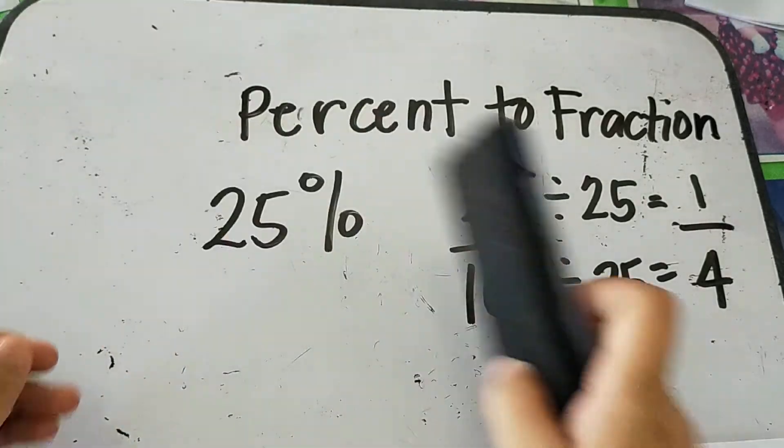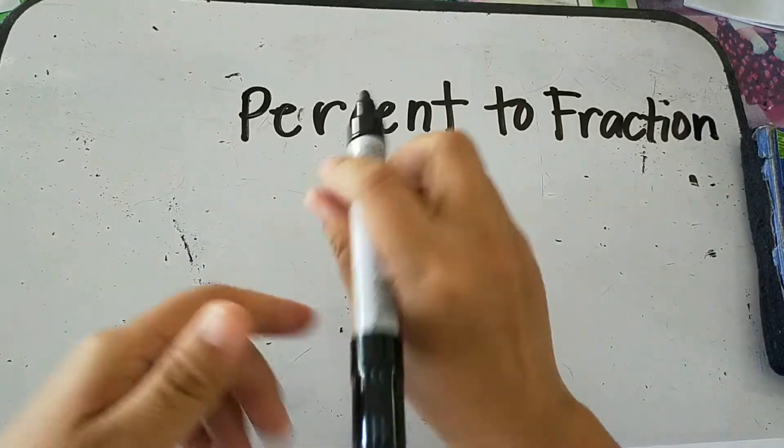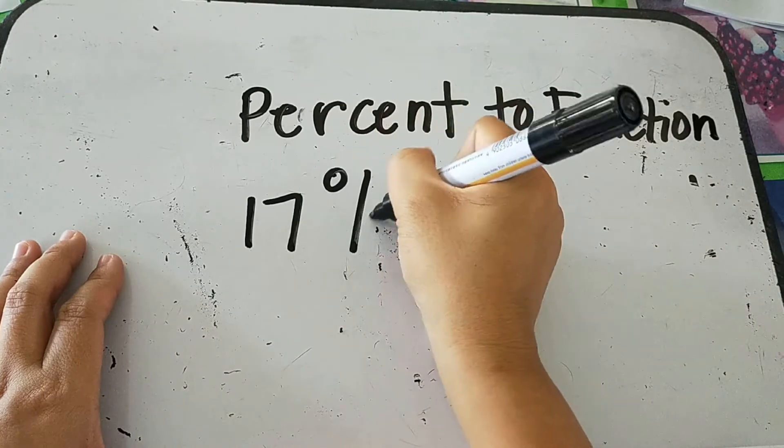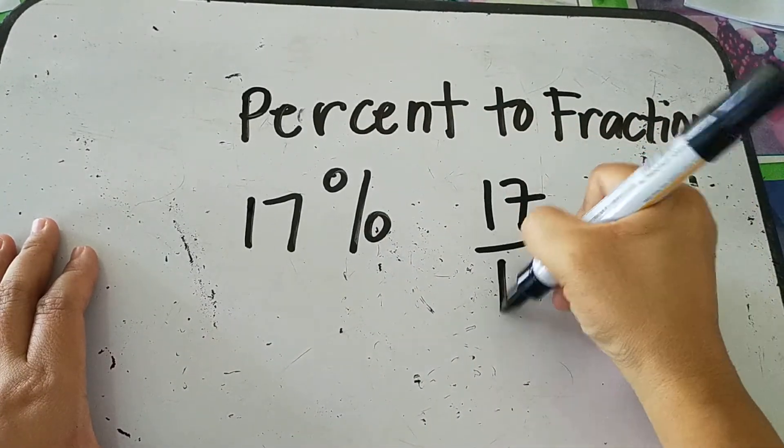Another example. So let's say 17 percent. So in fraction form, this is written as 17 over 100.